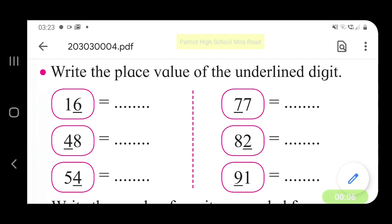Write the place value of the underlined digits. Which is the underlined digit here? 6. 6 is in units place. 1 is in tens place, so 6 units is 6. 7 is in tens place.